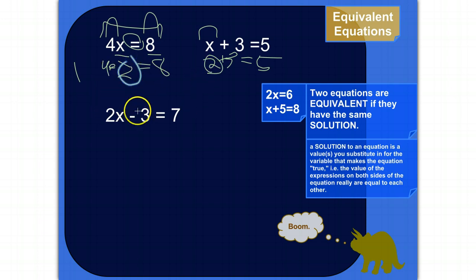Alright, so let's look at this equation over here. And let's write an equation that is equivalent. And there's an infinite number of equations that are equivalent to any given equation. So we can just come up with one. So first, let's find out what the solution to this equation is. So whatever x stands for, if you multiply by 2 and subtract 3, the answer has to be equal to 7.